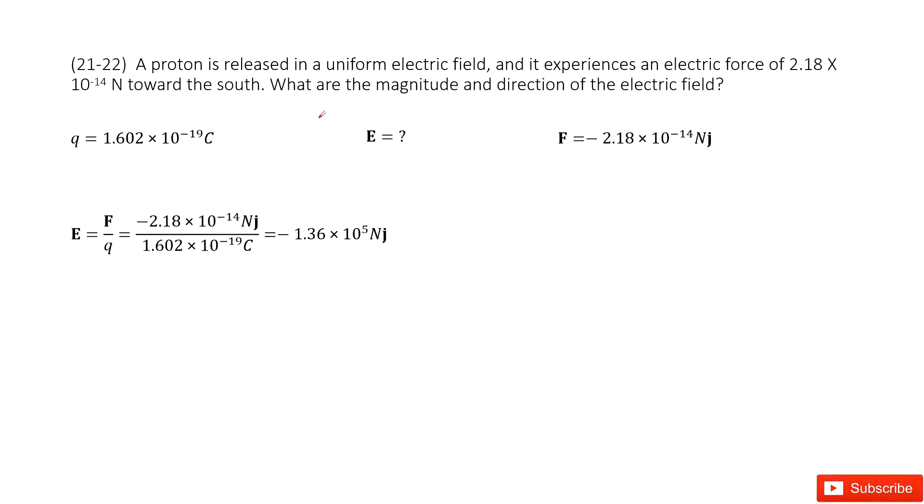We need to find the uniform electric field where the proton experiences an electric force of 2.18 × 10^-14 newtons in a direction due south. First, we need to write down the given quantities.